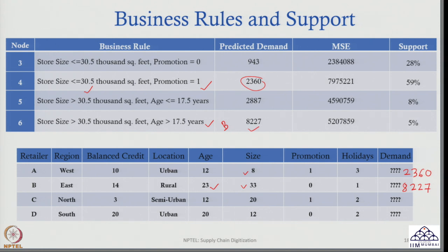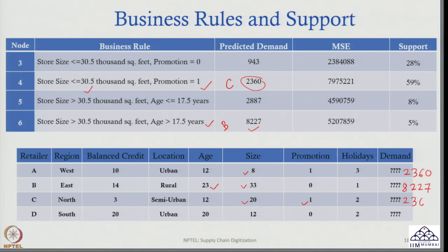Retailer C has these characteristics: located in the North, balanced credit is 3 lakh rupees, semi-urban area, age 12 years old, size 20,000 square feet, a promotional offer was given, and there are 2 holidays. First I check size — 20,000 square feet means either node 3 or node 4. Then I check promotion: promotion was given, so the predicted value will be 2,360.